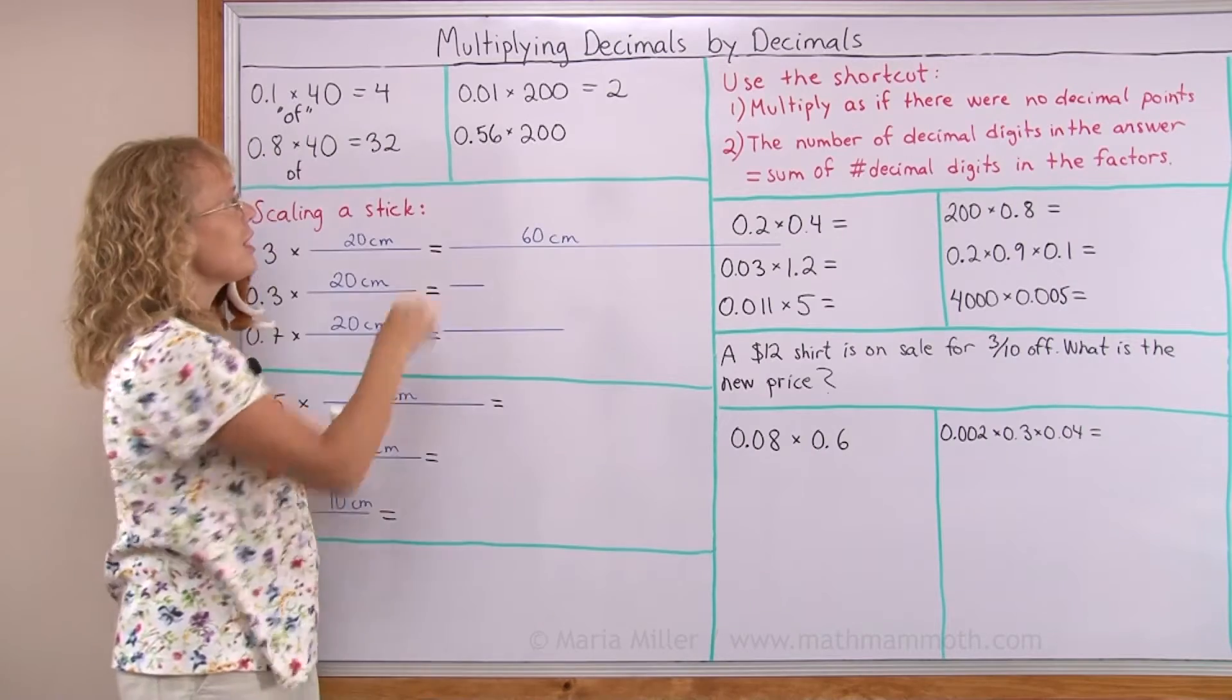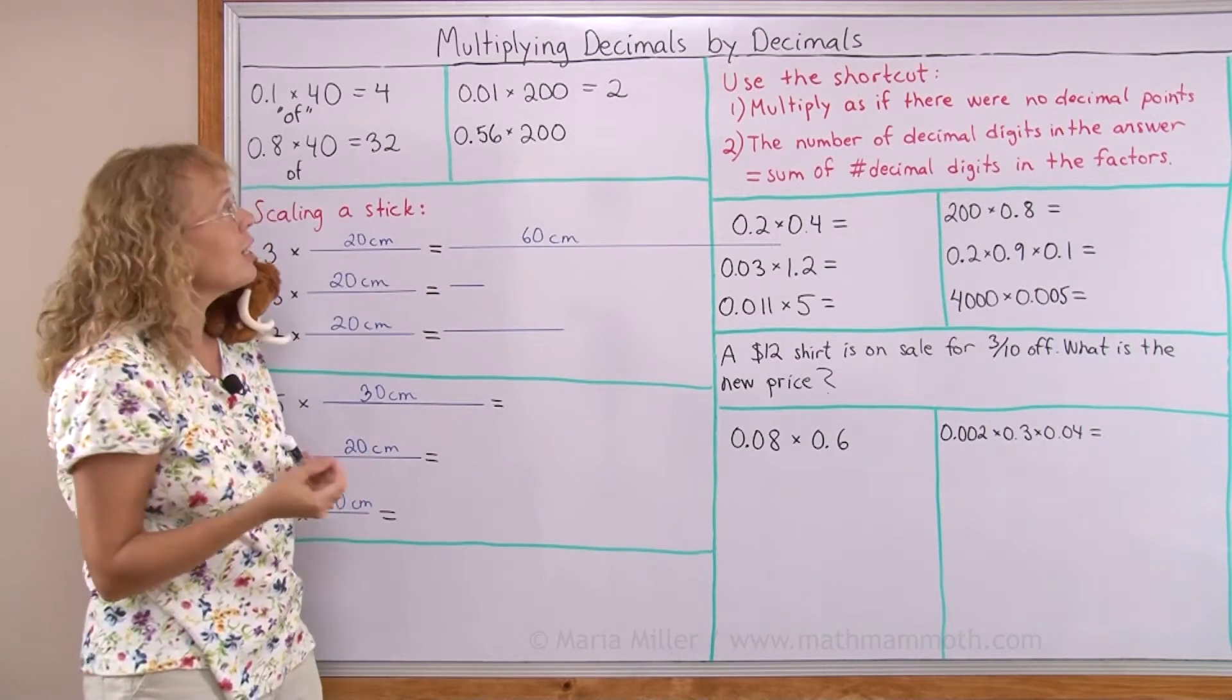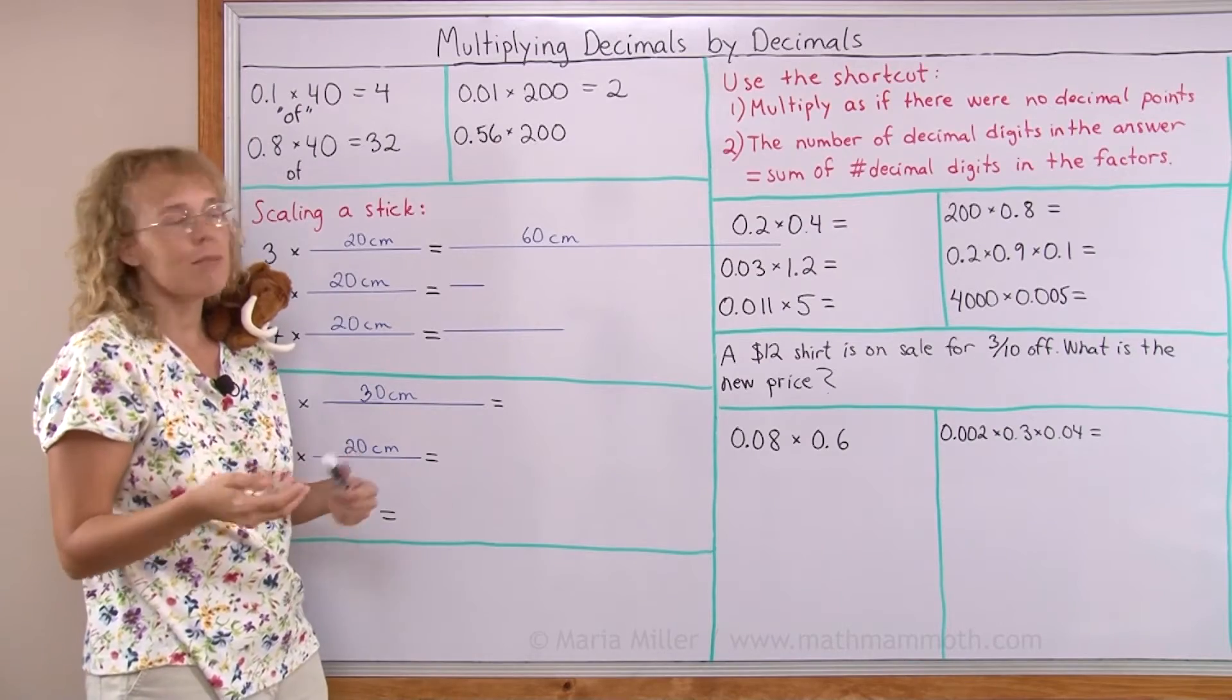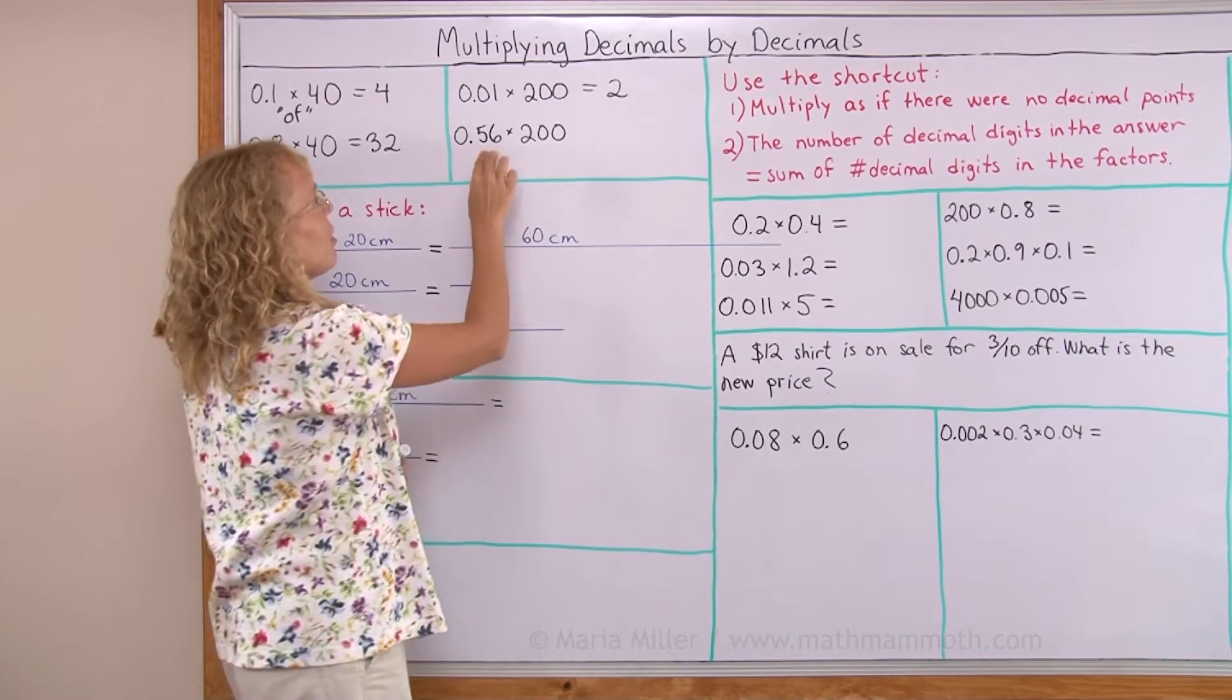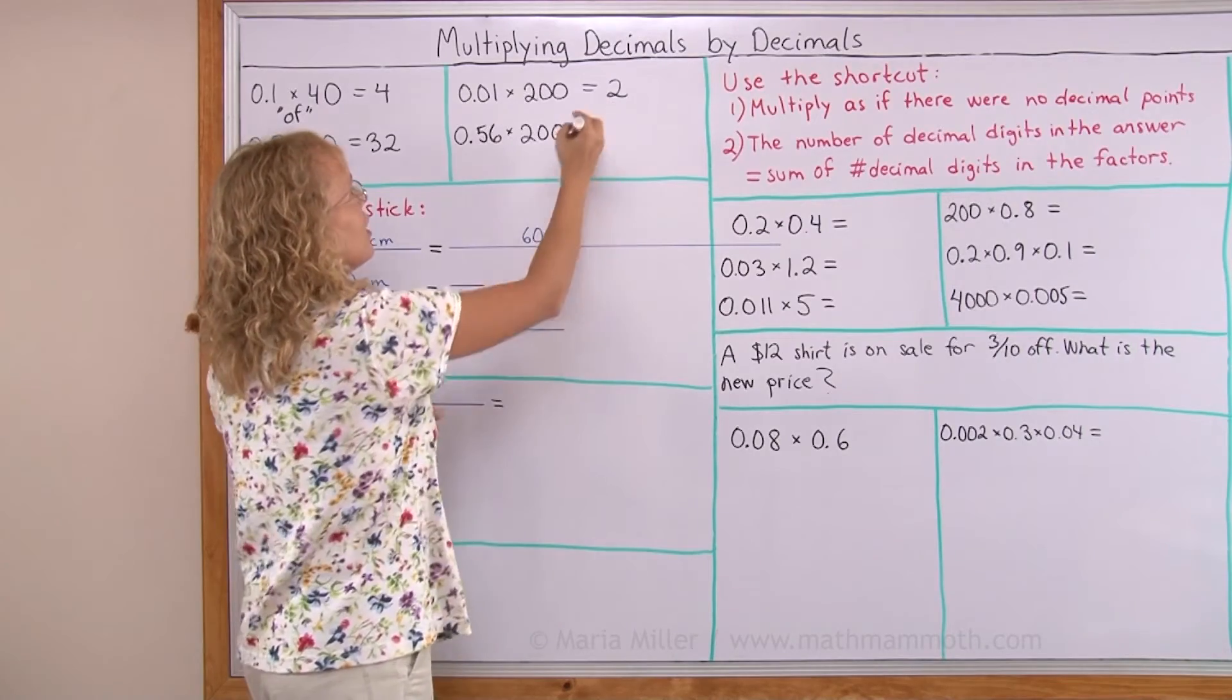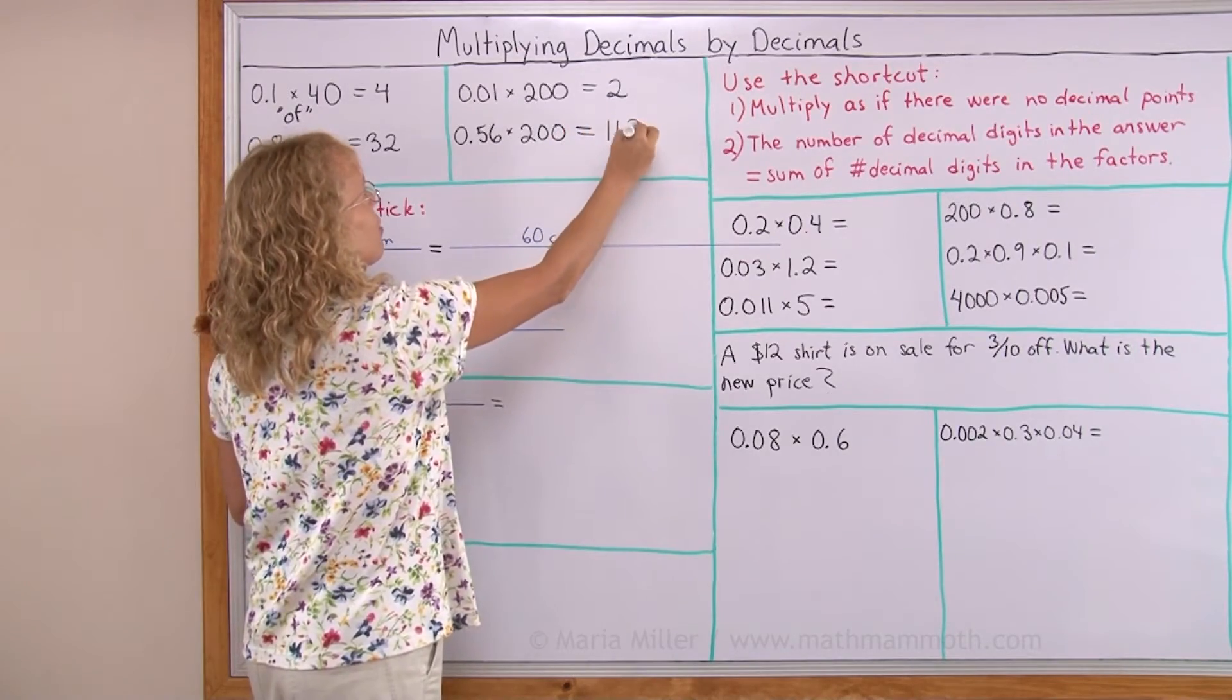And then here we have 56 hundredths of 200. 56 hundredths parts of 200. So I go 56 times 2 because 1 hundredth part was this much. So that is 112.